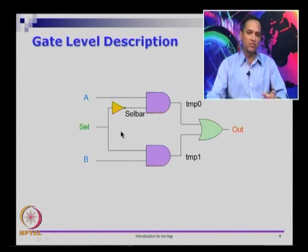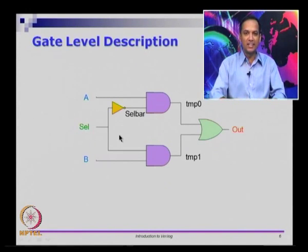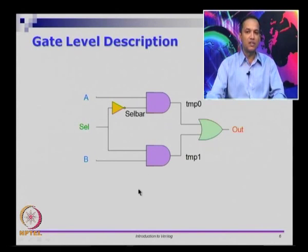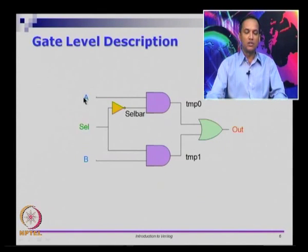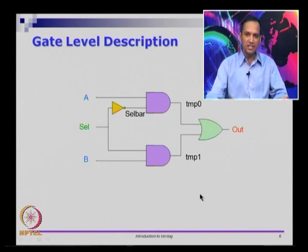In your labs you would probably have seen this already. Since this online course does not have a lab associated with it directly, I cannot make you do physical electrical connections, but you probably have this access in your colleges. I suggest that you go to the labs and try this out. You pick the components for the inverter, AND gates, and OR gate and physically lay them out on a breadboard. You will require wires to connect these gates together. Everywhere you see lines in the schematic, they are actually wires in the real world.